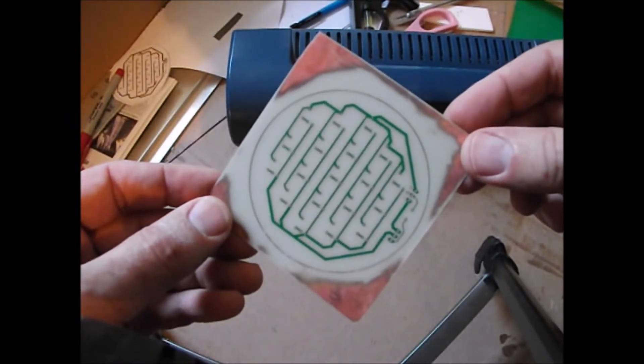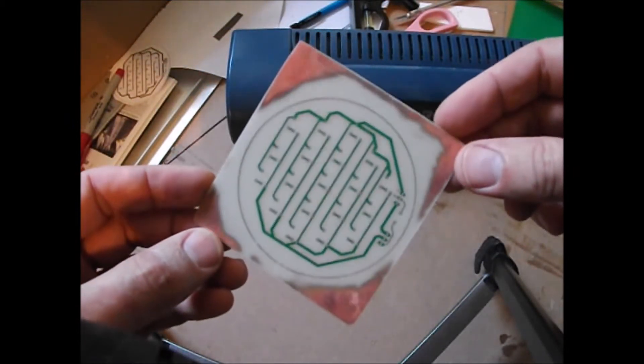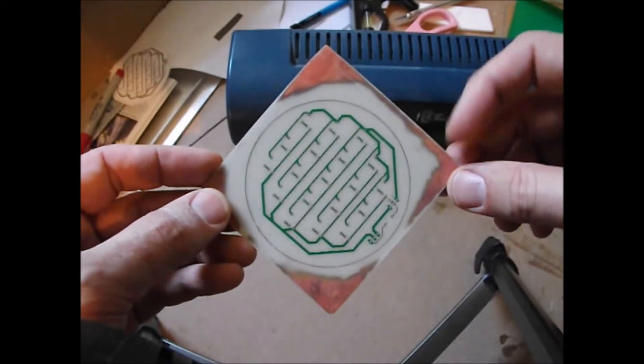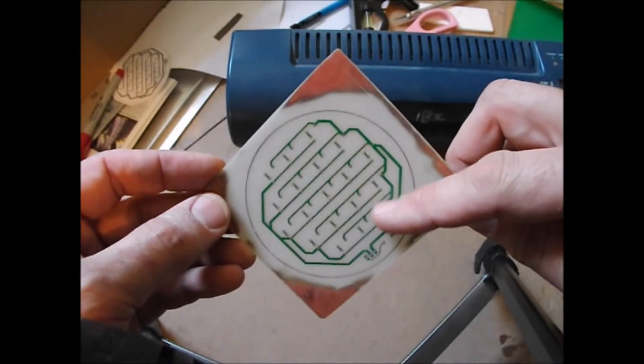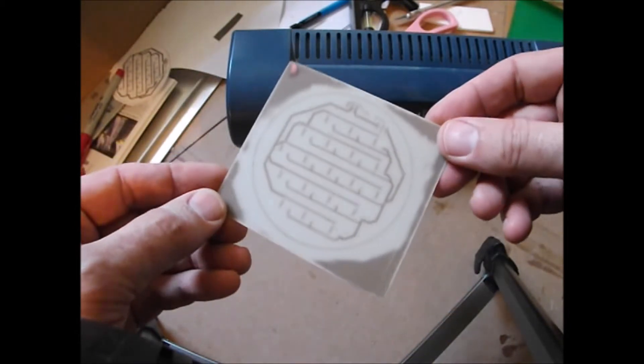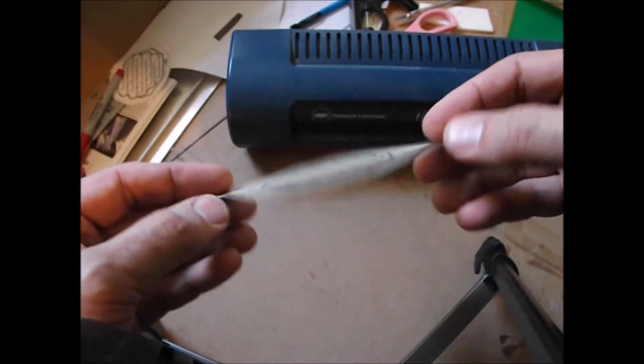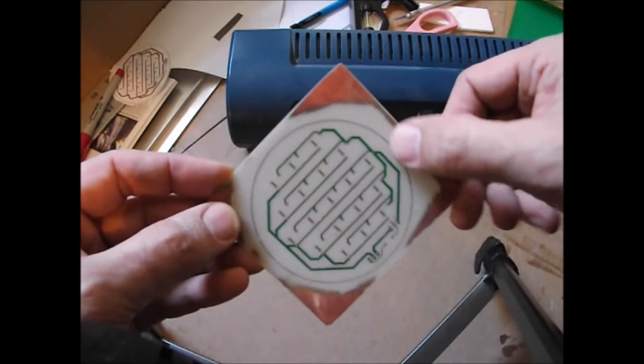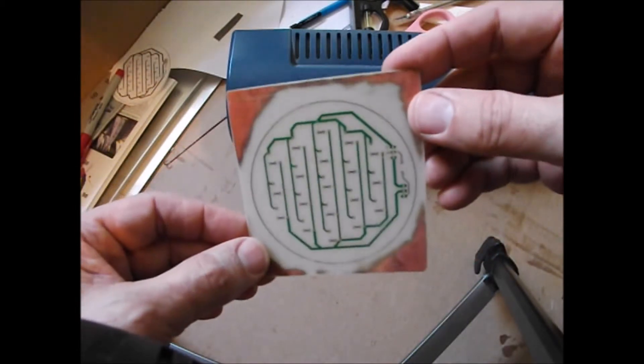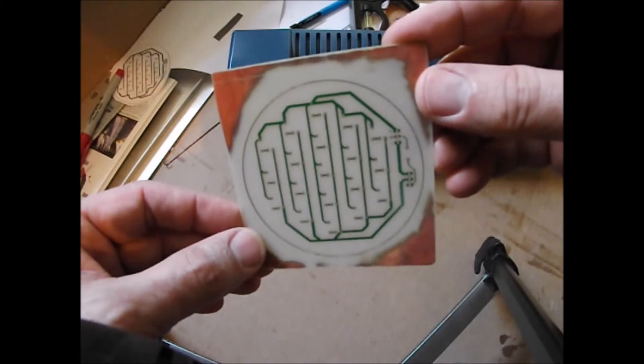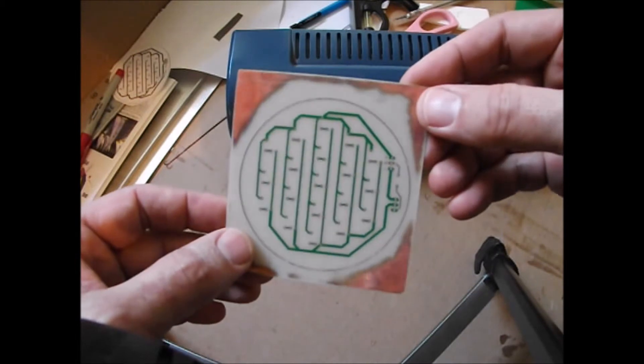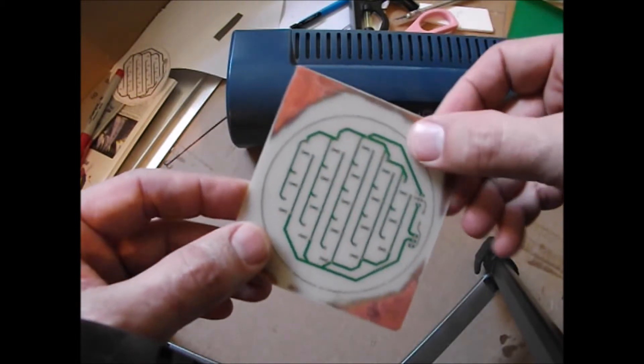Now that took a lot longer to etch than I thought it would. But it is completely etched now. You can see that the copper is completely gone on both sides. Copper here on the corners don't matter. I'm going to trim it to this circle anyway. The last step to do for this board is to trim it to shape.